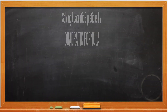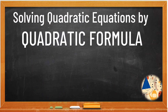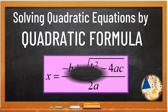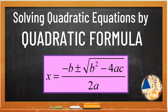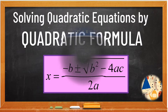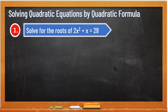Hello, students! Another topic for Mathematics 9 again today, and it's about quadratic formula. We're going to solve quadratic equations using a formula. What is our quadratic formula? x is equal to negative b plus minus the square root of b squared minus 4ac over 2a. We have to remember this formula, even though it's long, right?